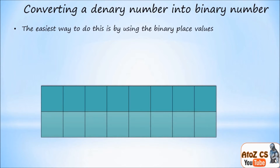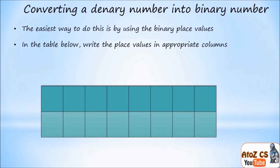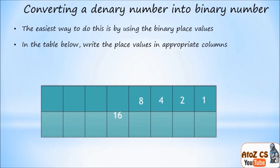The easiest way is by using the binary place values in the table below. Write down the place values in the appropriate columns, and remember you need to use eight bits. Always start with the last box — put one in the last box, then double that number: two, four, eight, sixteen, thirty-two, sixty-four, and 128.